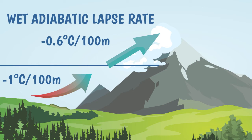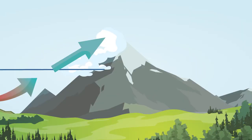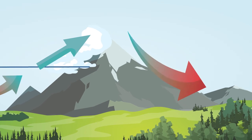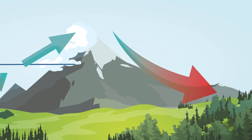Eventually, the rising air reaches the top of the mountain. By this stage, it will have cooled down a lot, and likely it will have lost most of its humidity. So we are now dealing with cold, dry air. Cold and dry air is heavy, and it will start to sink, rushing down the lee side of the mountain.